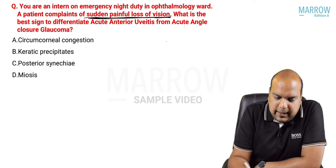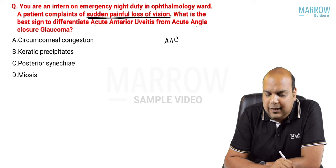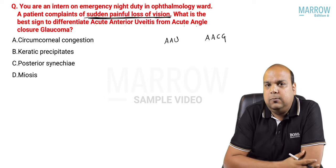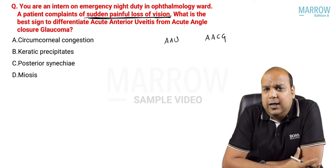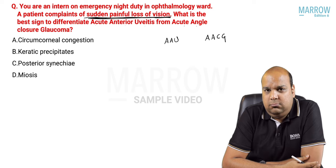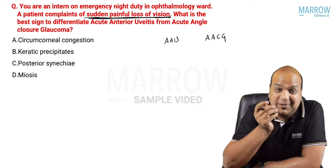They are not asking you to make the diagnosis. They are telling you that severe painful loss of vision can be either in acute anterior uveitis or in acute angle closure glaucoma. You are an intern on night duty - how will you differentiate between the two?